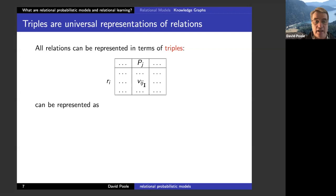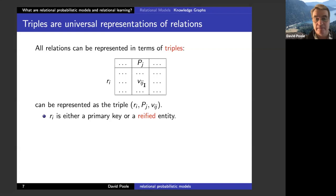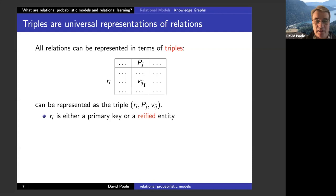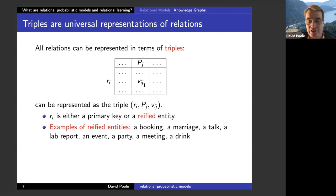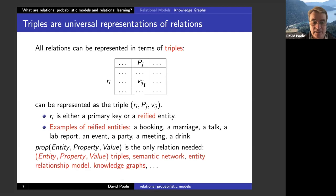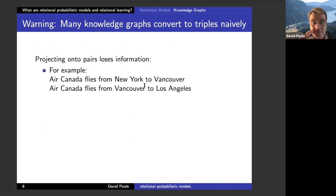So triples consist of a relation (predicate) and values, and can be represented as: entity R_i has property P_j with value V_ij. R_i is either a primary key or a reified entity — something like a booking, a marriage, a talk, or a lab report. These reified entities are things that machine learning people often can't handle. This representation is what's been called semantic networks and entity-relationship models, and more recently, knowledge graphs. There's nothing special — it's the old-fashioned things we were all familiar with. But now we're going to start learning them.